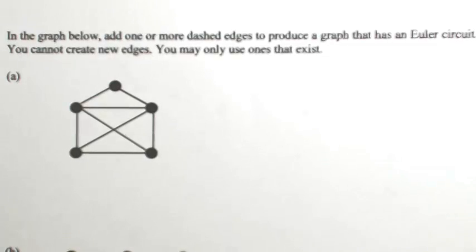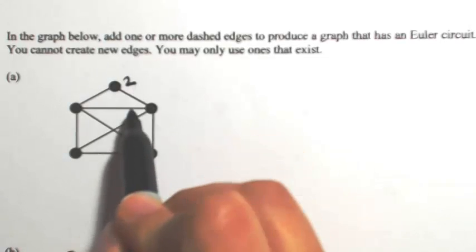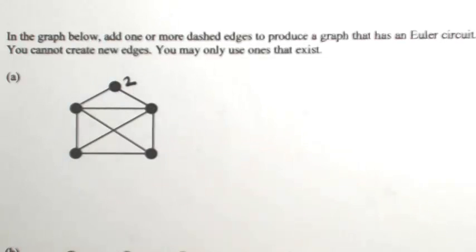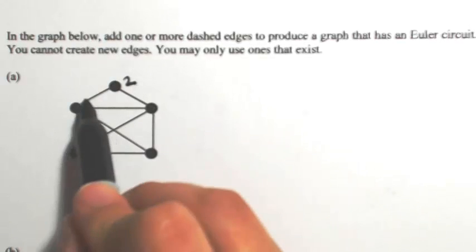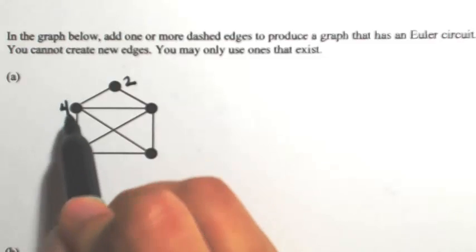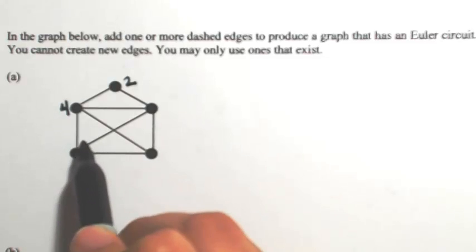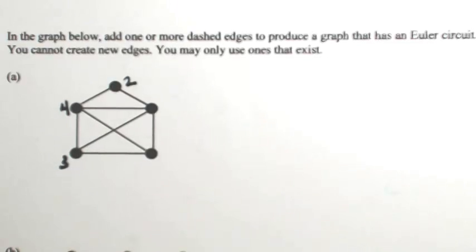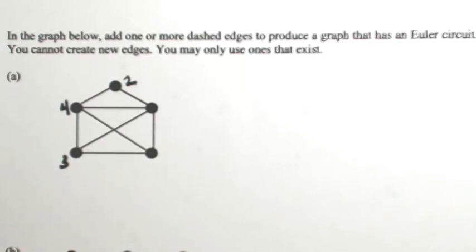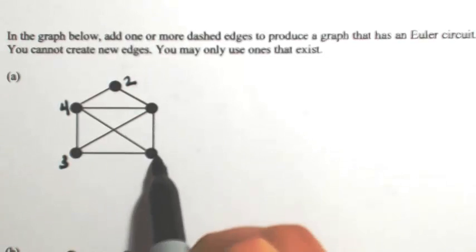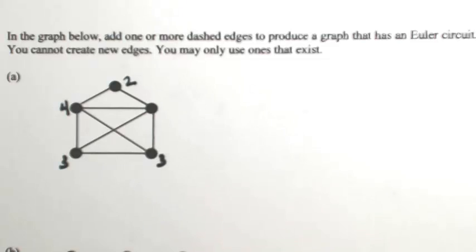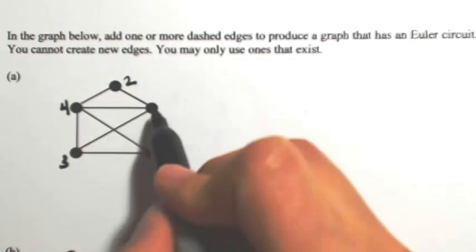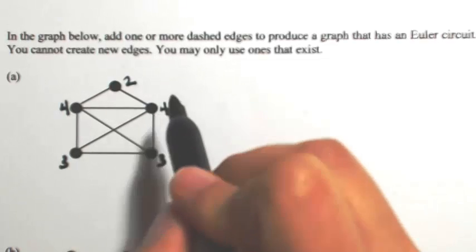Starting at the top, we have two going into that first vertex — one, two, three, four on the left — and one, two, three on another. So automatically this does not have an Euler circuit because I have a vertex with an odd degree. As a matter of fact, I have two of them, and then at the top I have a four.